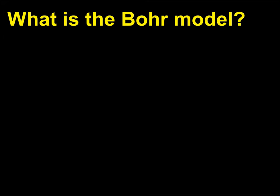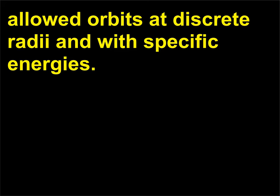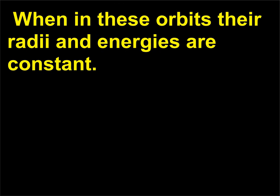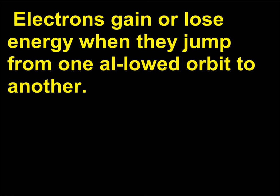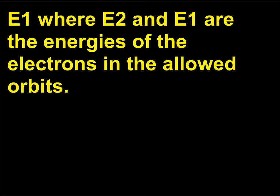What is the Bohr model? The Bohr model is a nuclear model with electrons moving in only certain allowed orbits at discrete radii and with specific energies. When in these orbits their radii and energies are constant, and the atoms do not emit or absorb radiation. Electrons gain or lose energy when they jump from one allowed orbit to another, emitting or absorbing light with a frequency given by hf = E2 − E1, where E2 and E1 are the energies of the electrons in the allowed orbits.